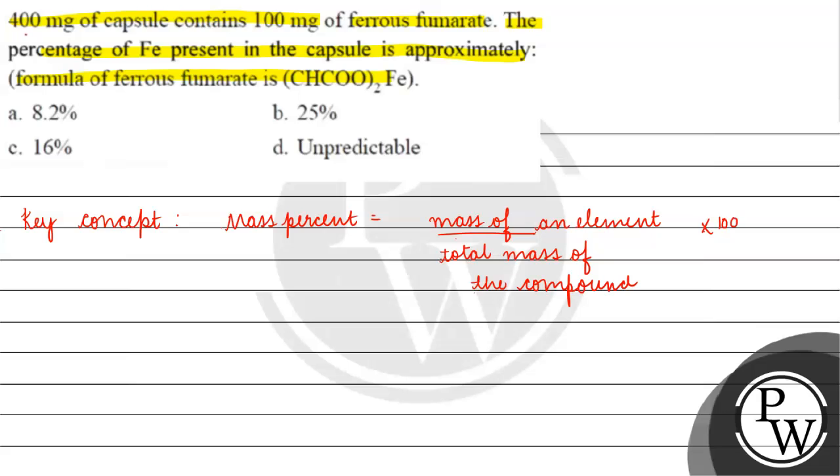Yani basically agar mass percent of iron nikalna hai, toh pehle hume nikalna padega ki kitna mass hoga iron ka us compound mein by the total mass of the compound. Total mass of the capsule hume diya hua hai 400 mg.